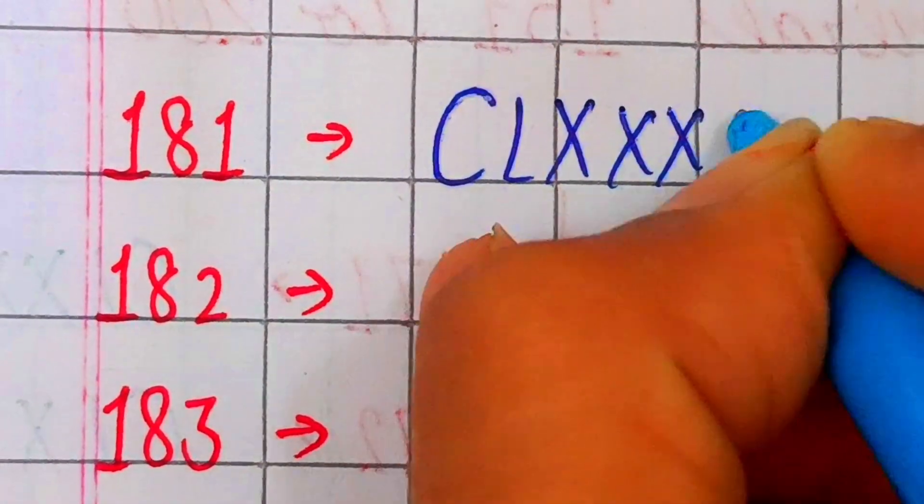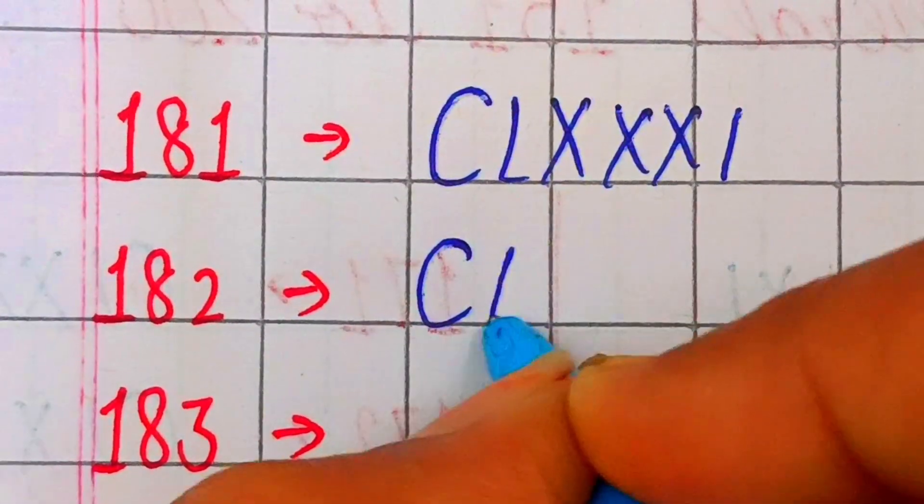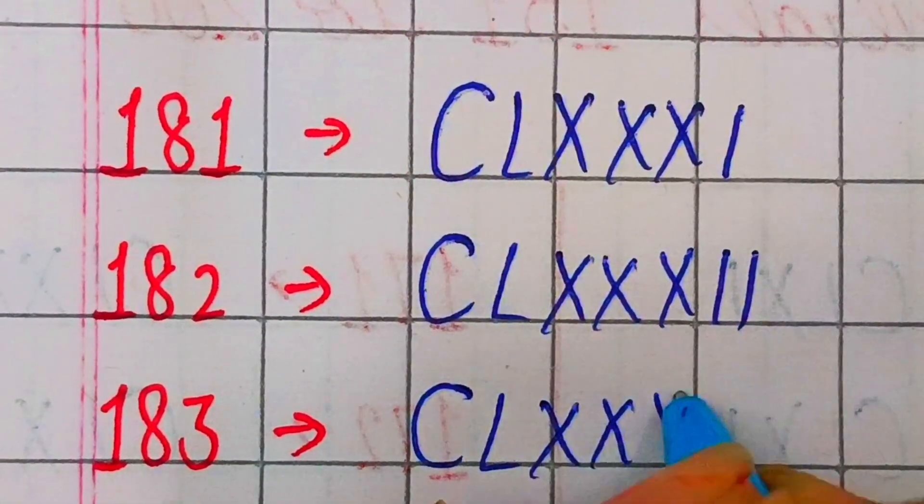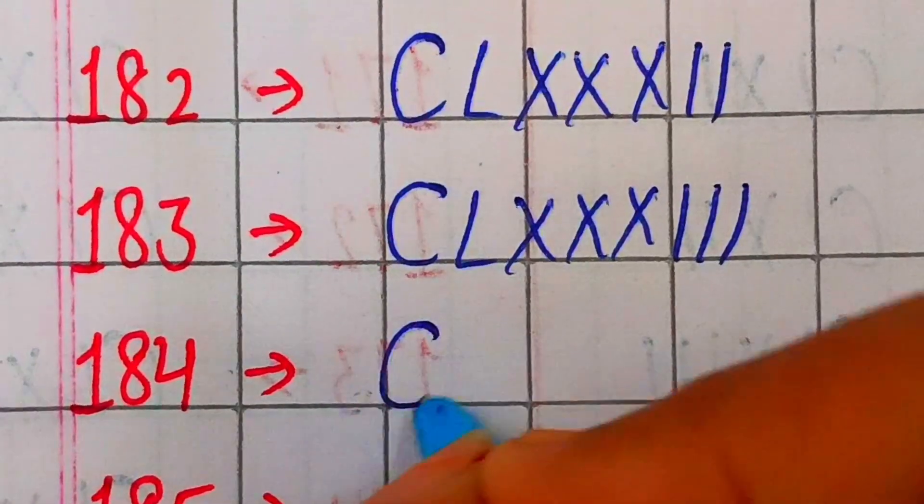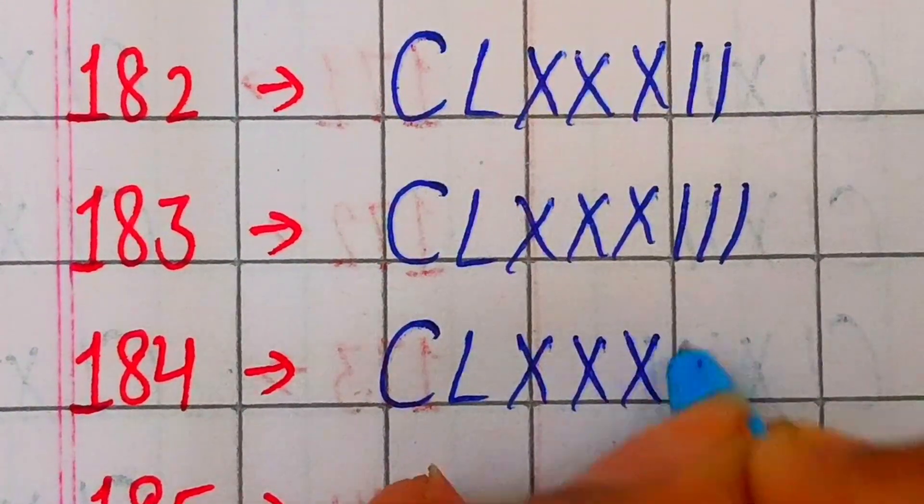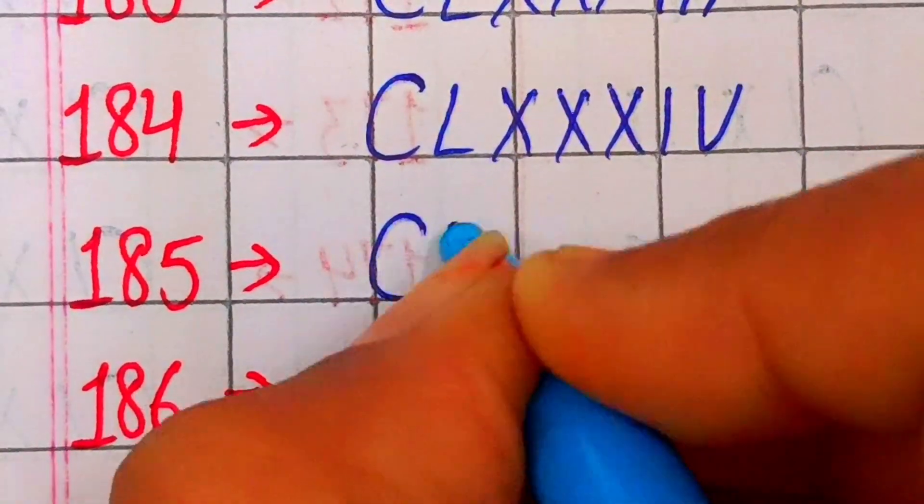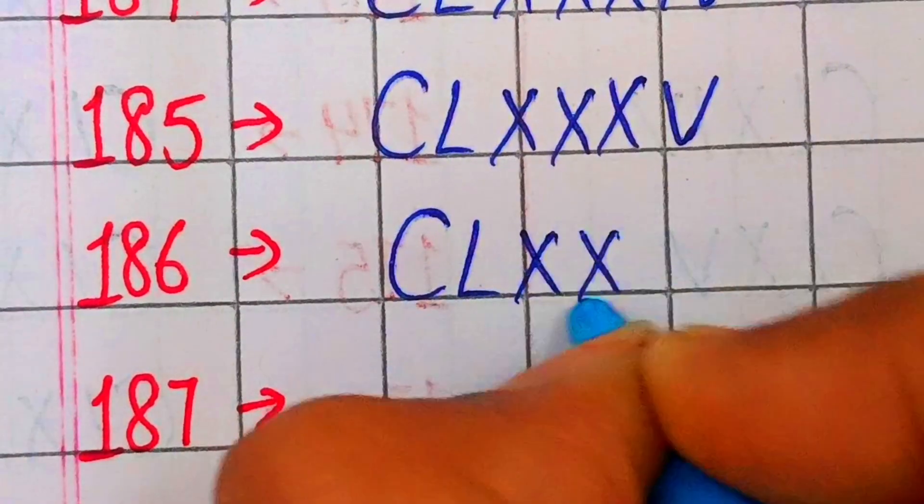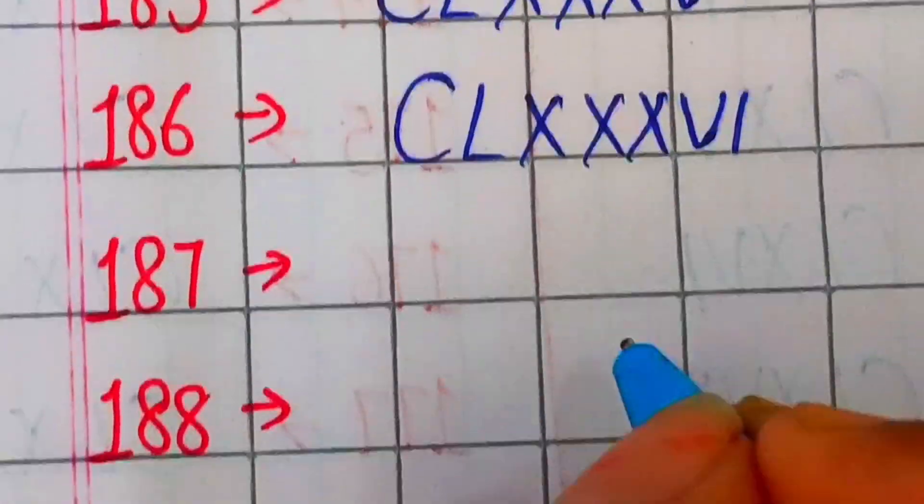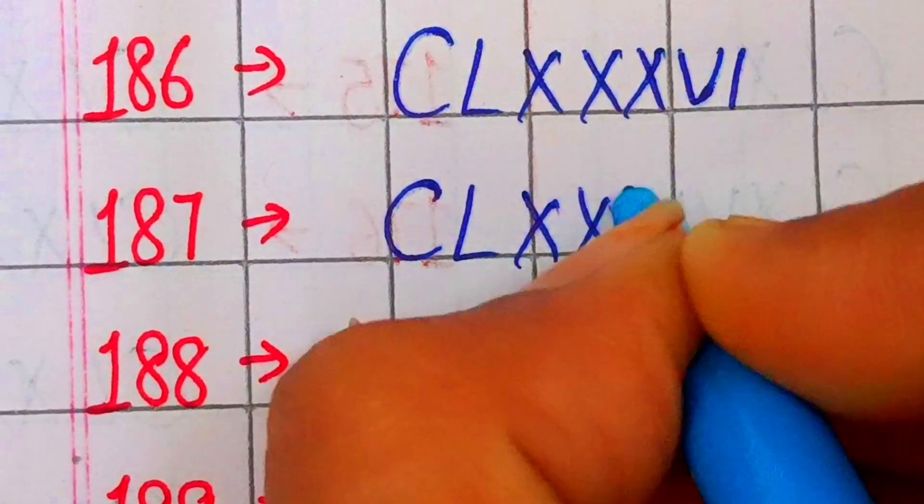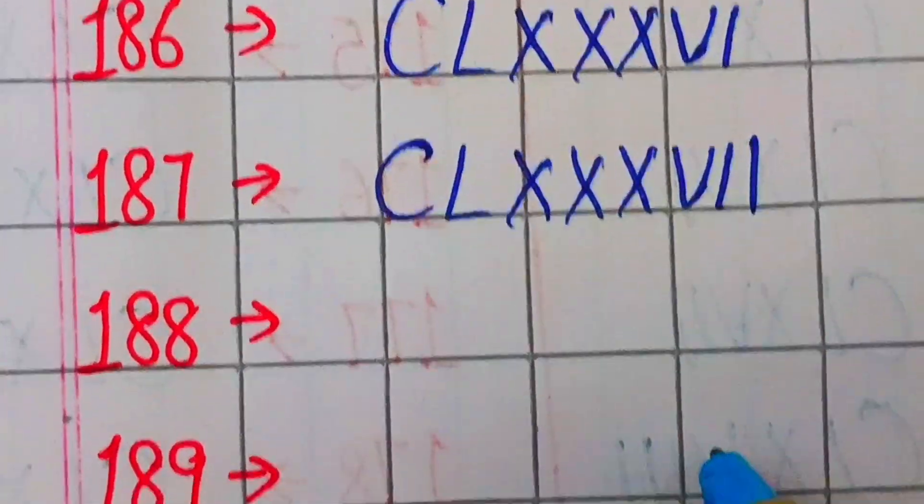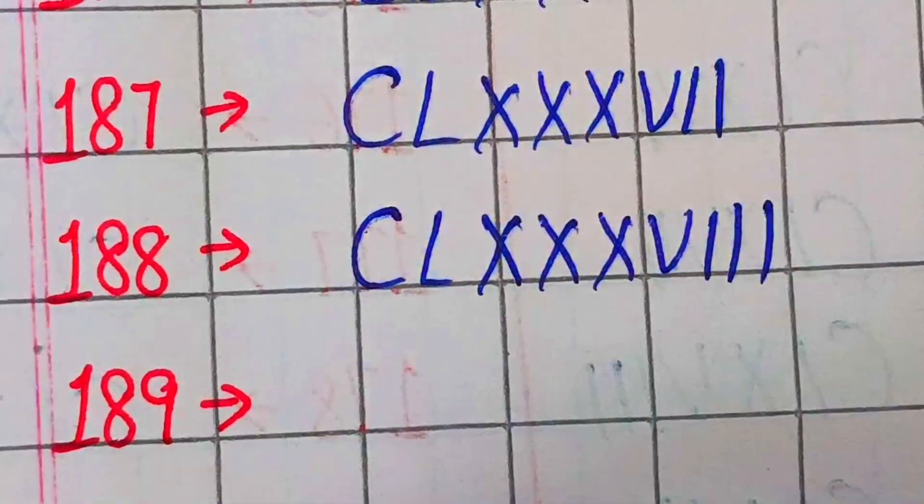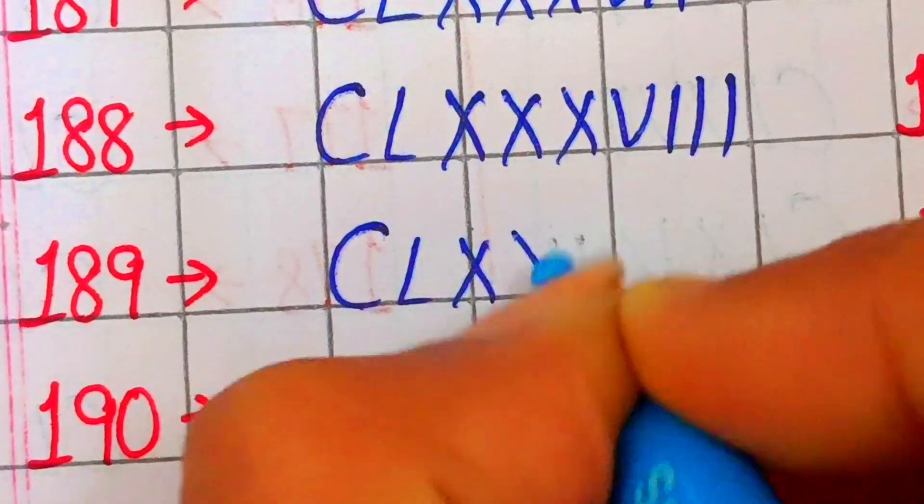181 CLXXXI, 182 CLXXXII, 183 CLXXXIII, 184 CLXXXIV, 185 CLXXXV, 186 CLXXXVI, 187 CLXXXVII, 188 CLXXXVIII, 189 CLXXXIX.